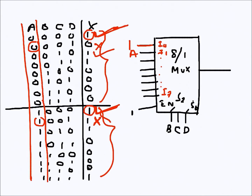Looking at I2, I see both output values are one, so I apply one here. For I3, I see a change: the output is one when A is zero, and zero when A is one — the output is inverted with respect to A. So I have to apply A-bar to I3. For I4, both outputs are zero, so I apply zero.